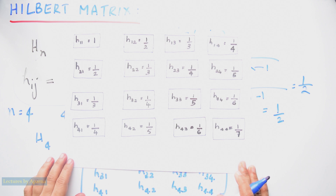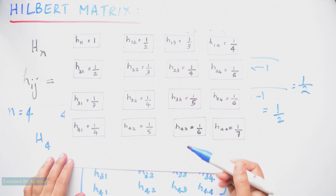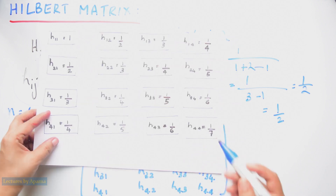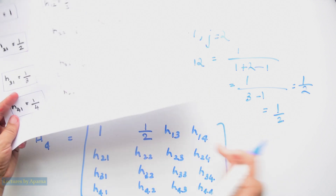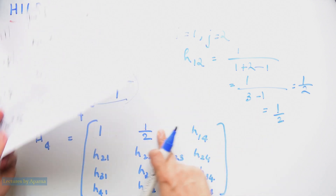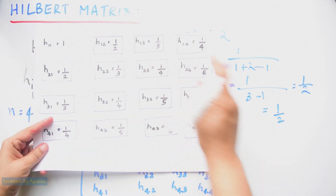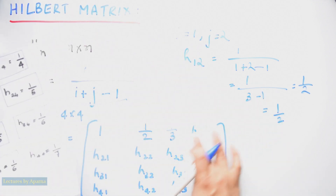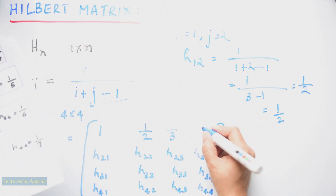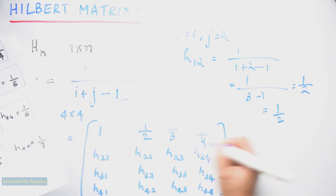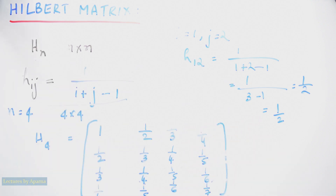Once you get all the elements, you can write the matrix: H13 is 1 by 3, H14 is 1 by 4. So this is how we write a 4 by 4 Hilbert matrix.